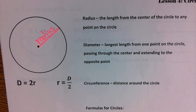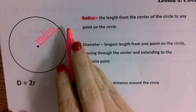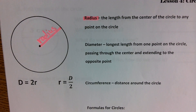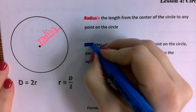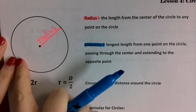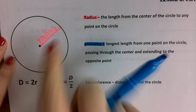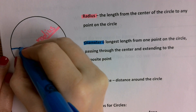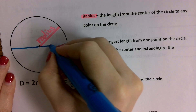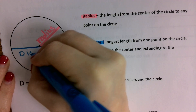Go ahead and label that as the radius. The radius is the measurement that starts at the center and extends to a point on the circle. The diameter is the longest measurement inside of your circle — it spans from one point on the circle, goes to the center, and then goes directly across to the opposite side. So I could start here, go directly through the center, and extend all the way to the opposite side — that measurement is called my diameter.